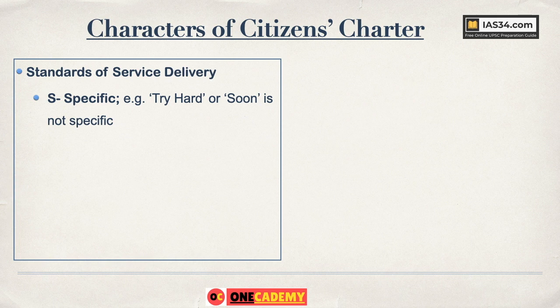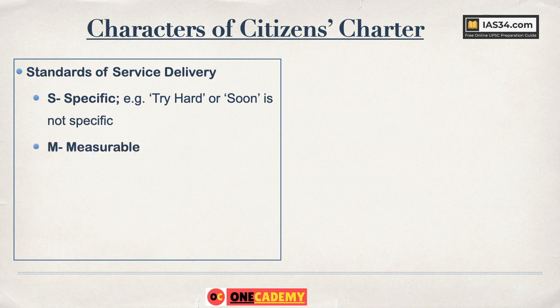Different kinds of service delivery have specified time limits — for example, a caste certificate has a 15-day limit. So it has to be specific. M stands for Measurable — if a goal has to be achieved, it has to be measurable. For example, in exams the measure is marks. Unless there is a measuring capability in that service delivery standard, the goal won't be achieved.